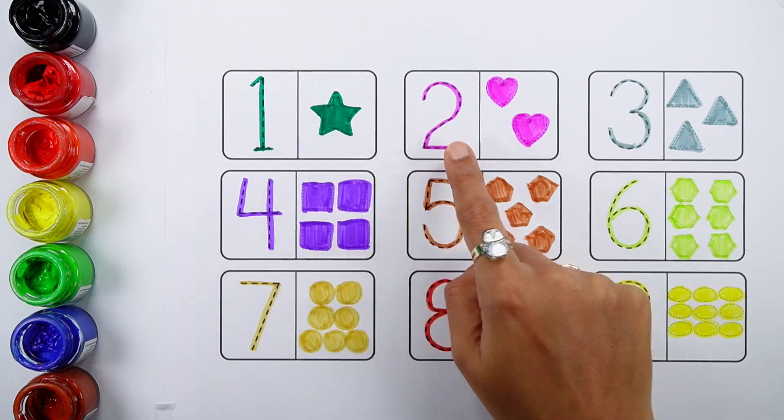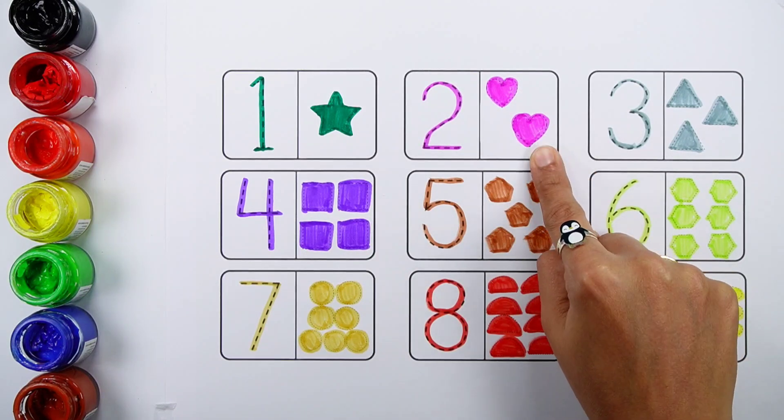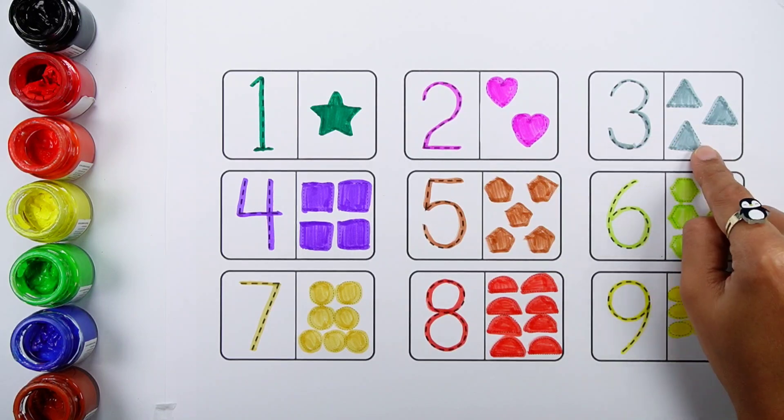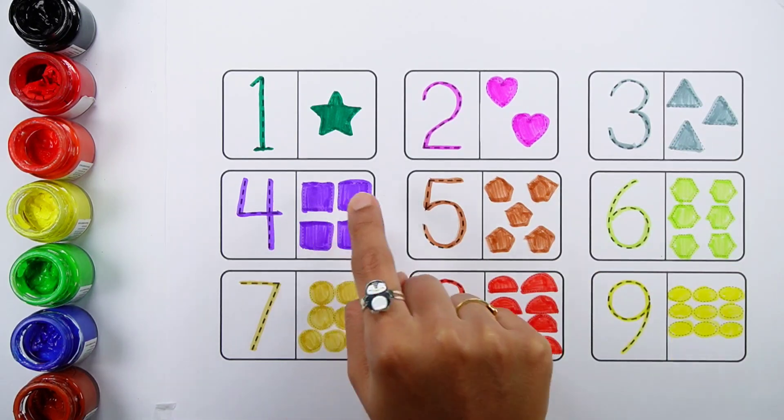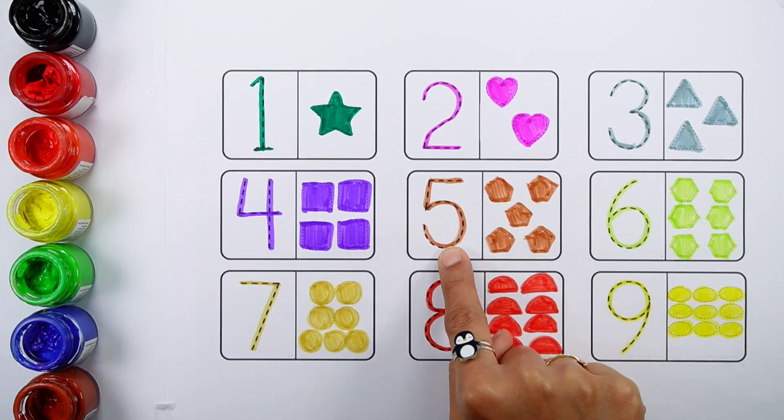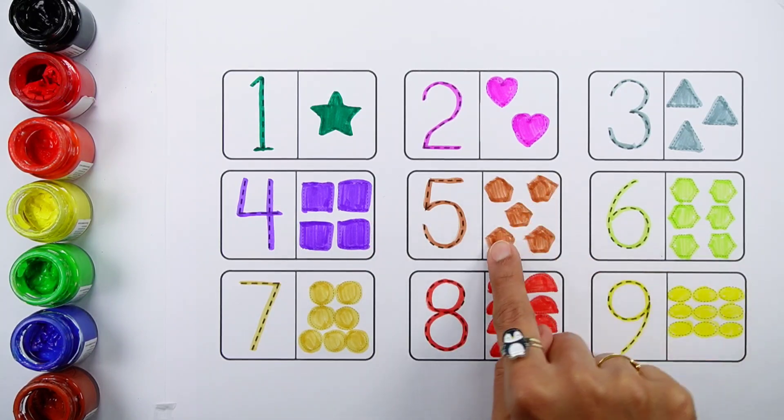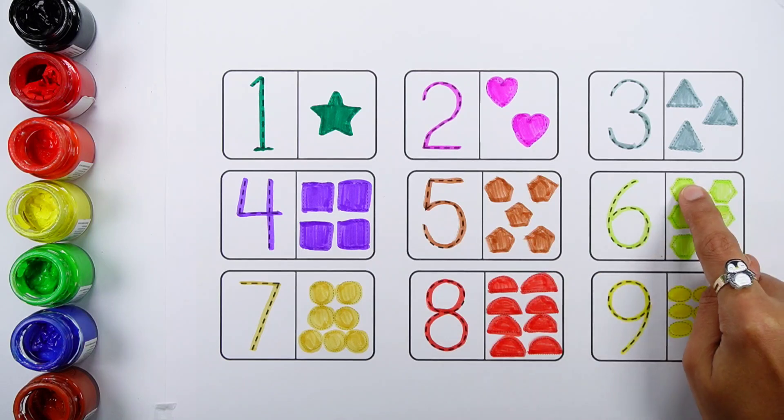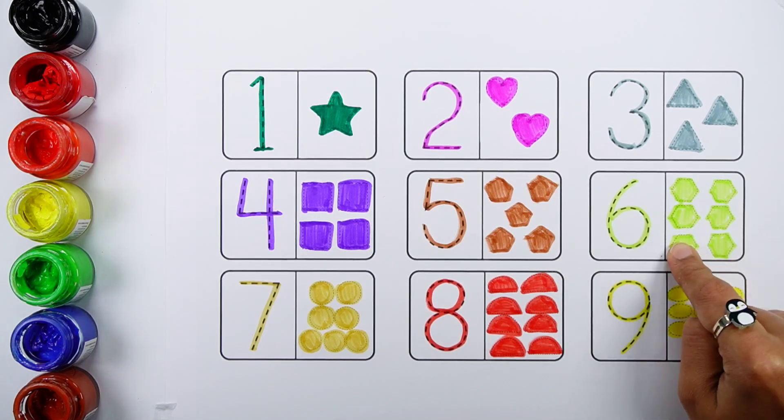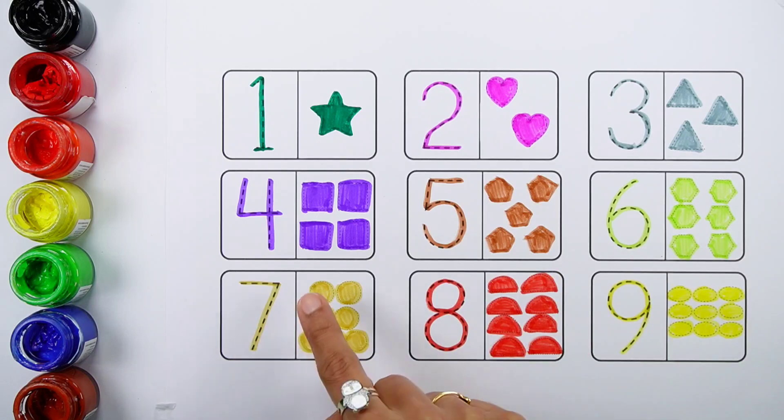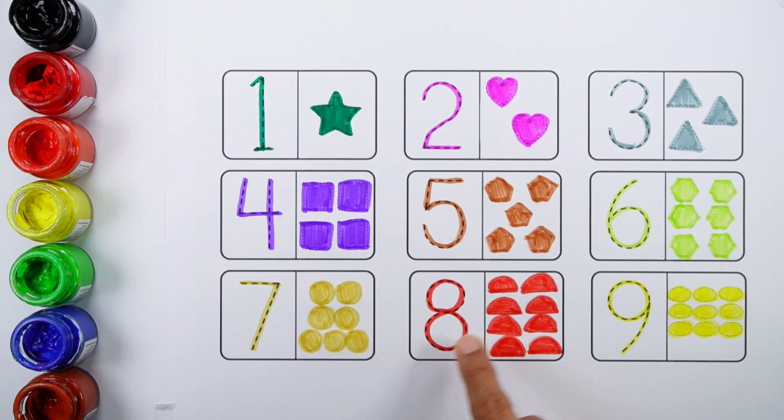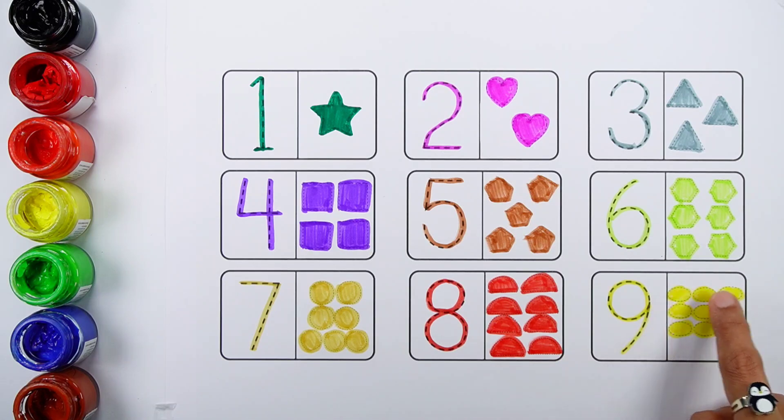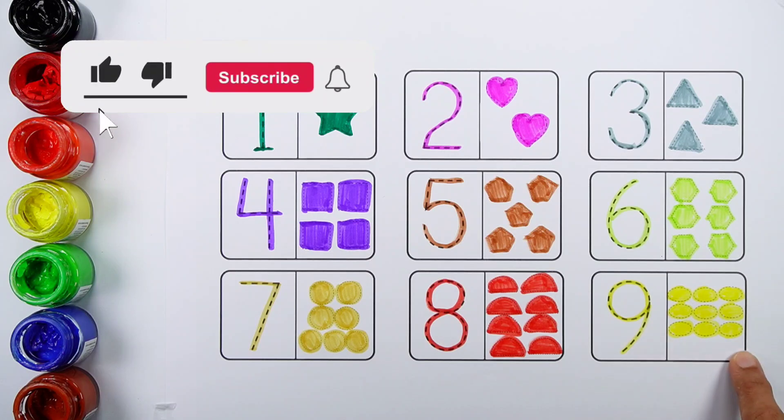One, one star. Two, one, two, two hearts. Three, one, two, three, three triangles. Four, one, two, three, four, four squares. Five, one, two, three, four, five, five pentagons. Six, one, two, three, four, five, six, six hexagons. Seven, one, two, three, four, five, six, seven, seven circles. Eight, one, two, three, four, five, six, seven, eight, eight semicircles. Nine, one, two, three, four, five, six, seven, eight, nine, nine ovals.